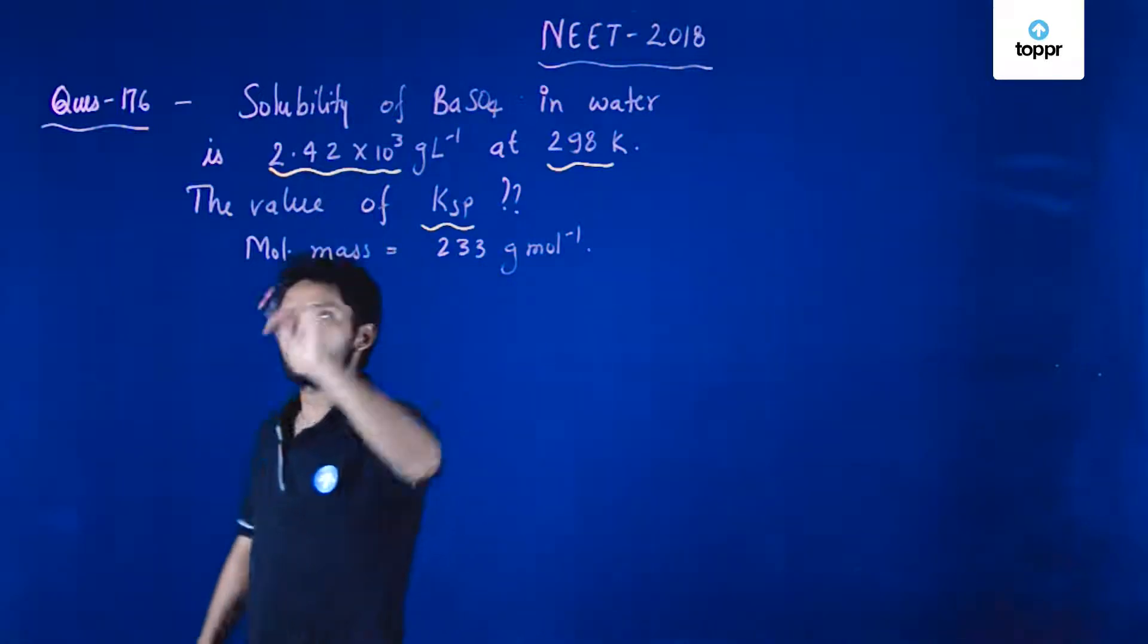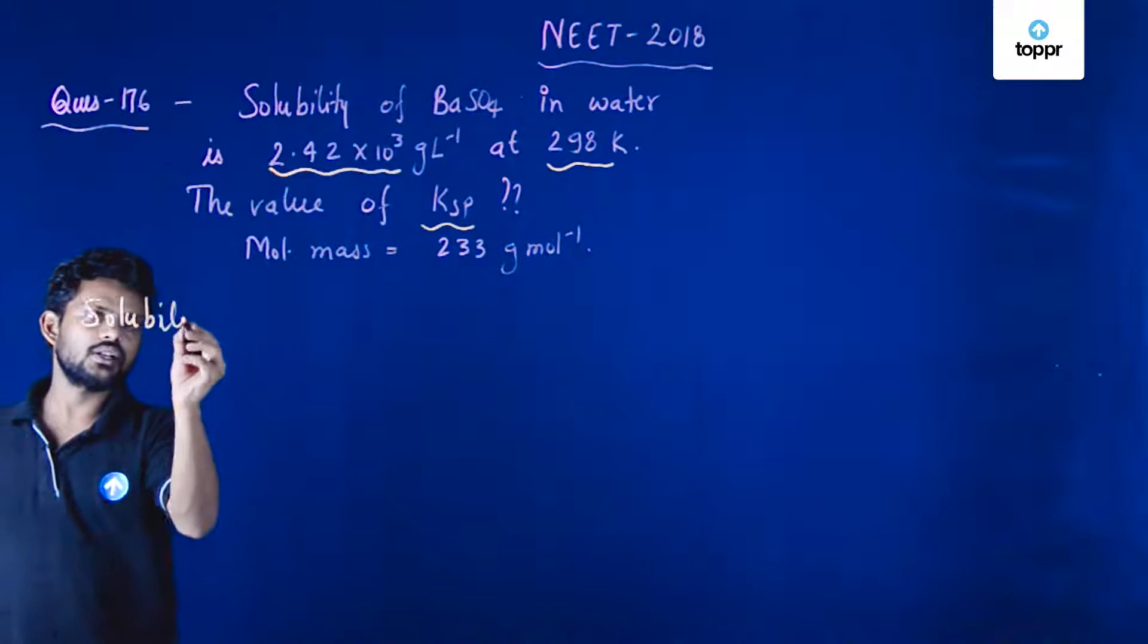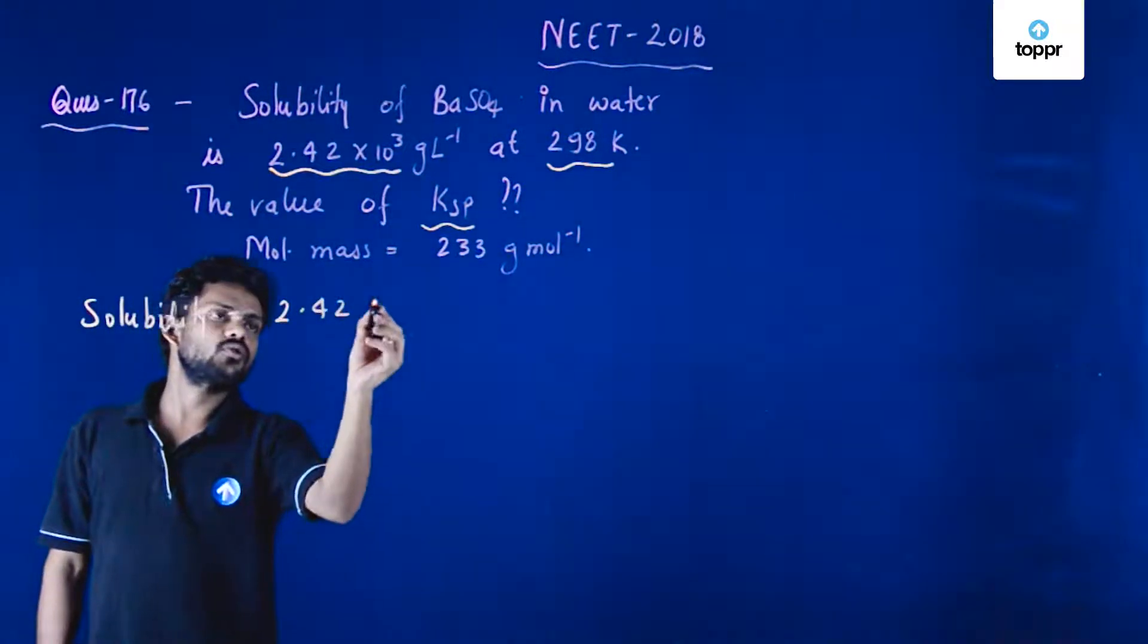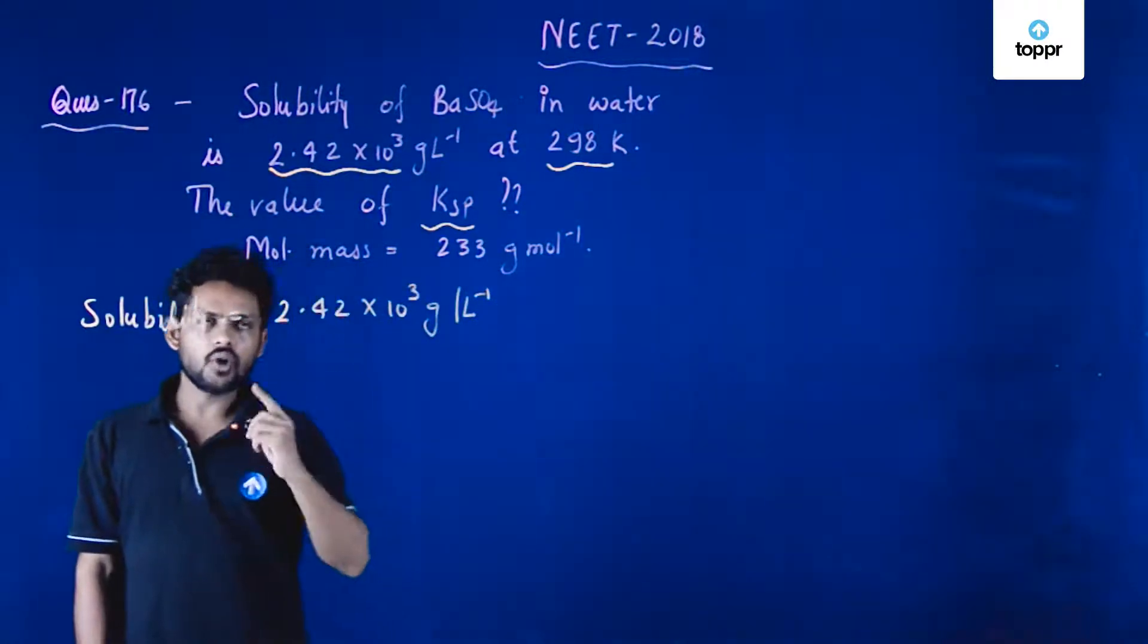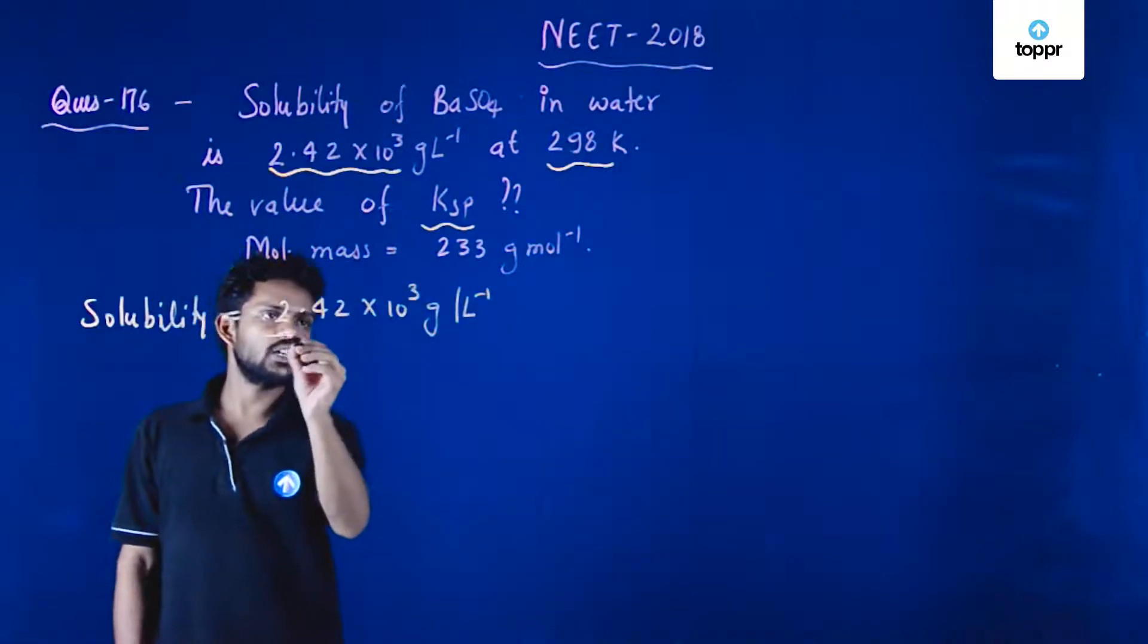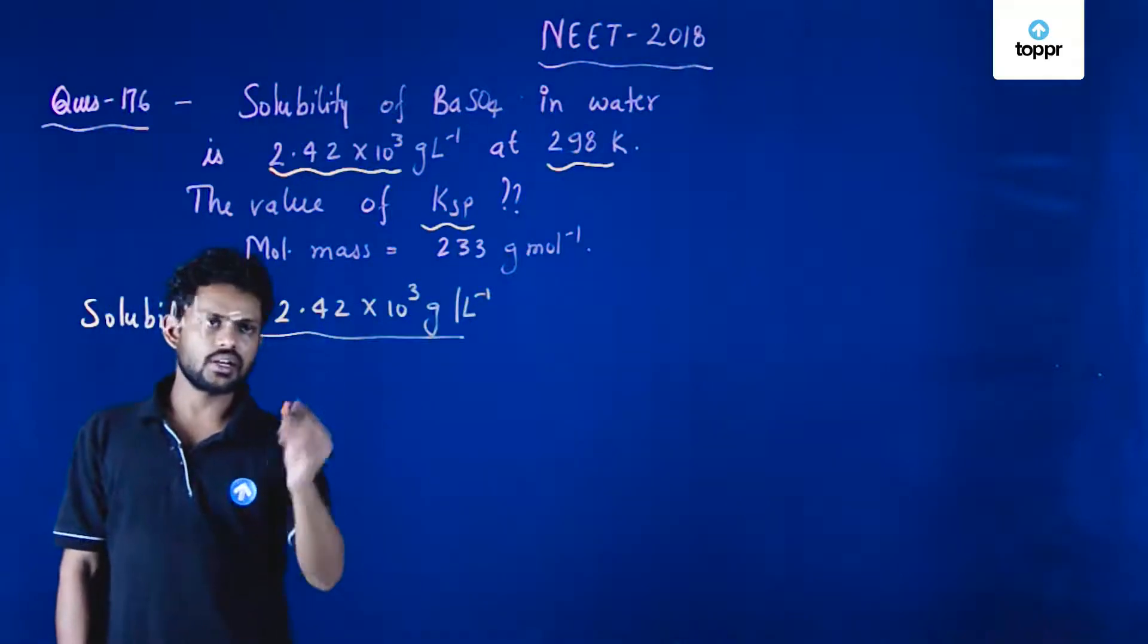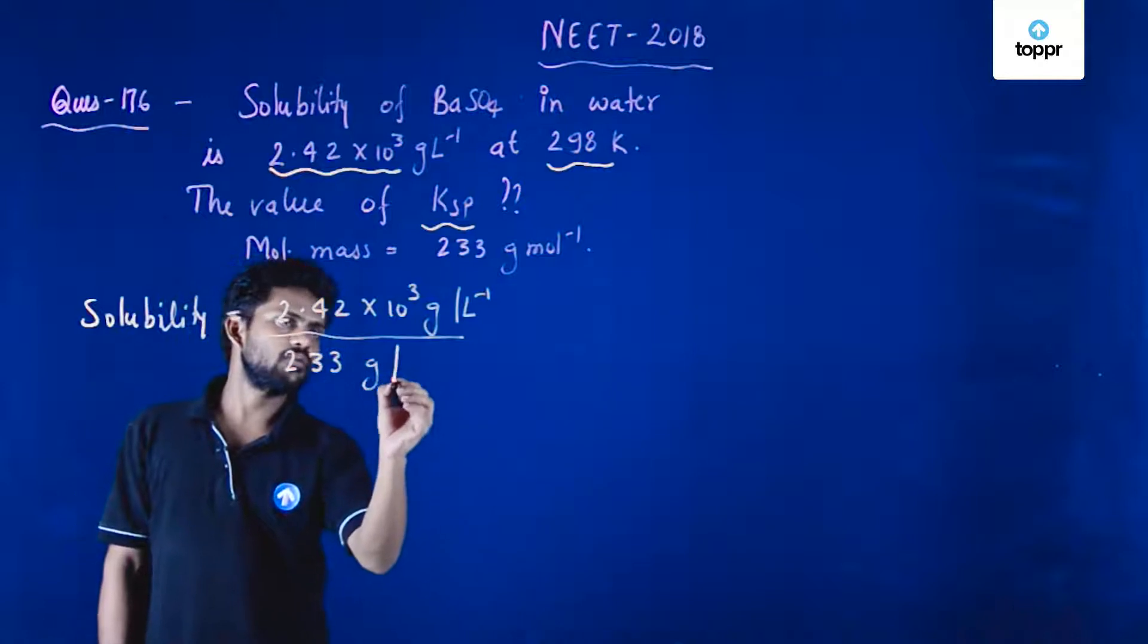If you look at the solubility, it is given as 2.42 × 10^-3 grams per liter. What we can do is convert this into moles per liter. To convert into moles per liter, we need to simply divide by the molecular mass, which is 233 grams per mole.